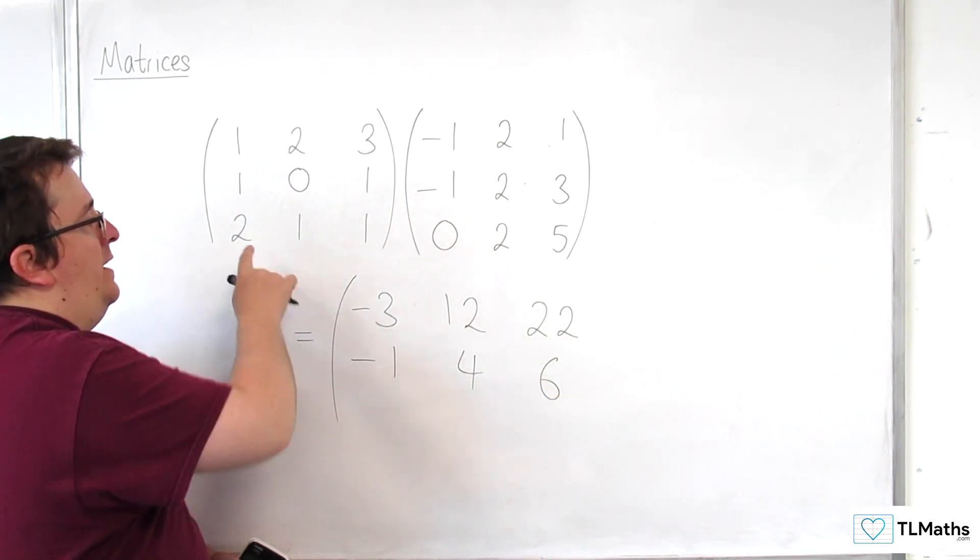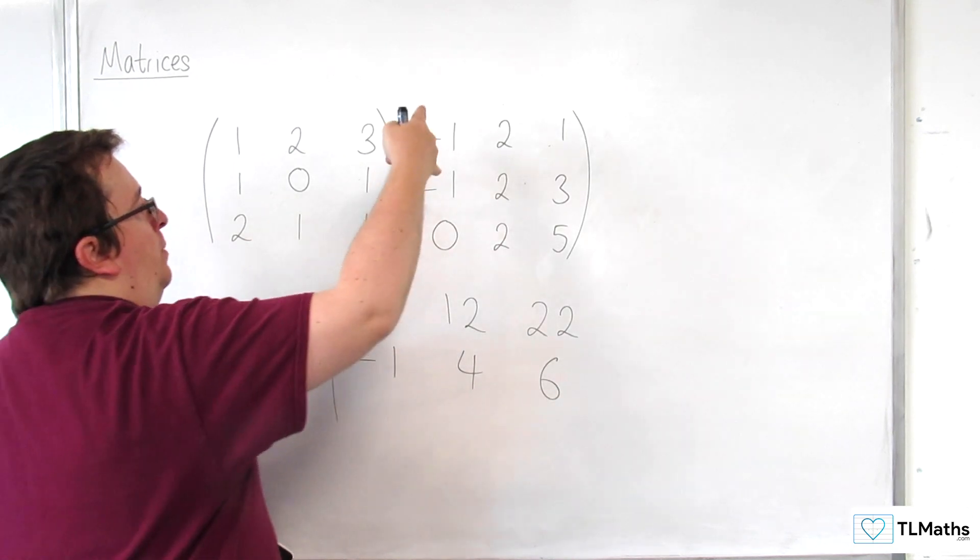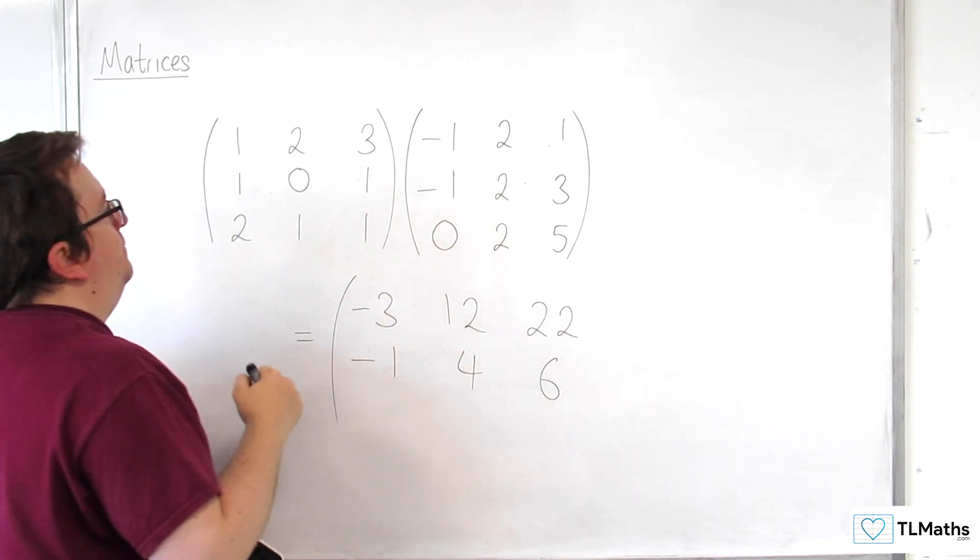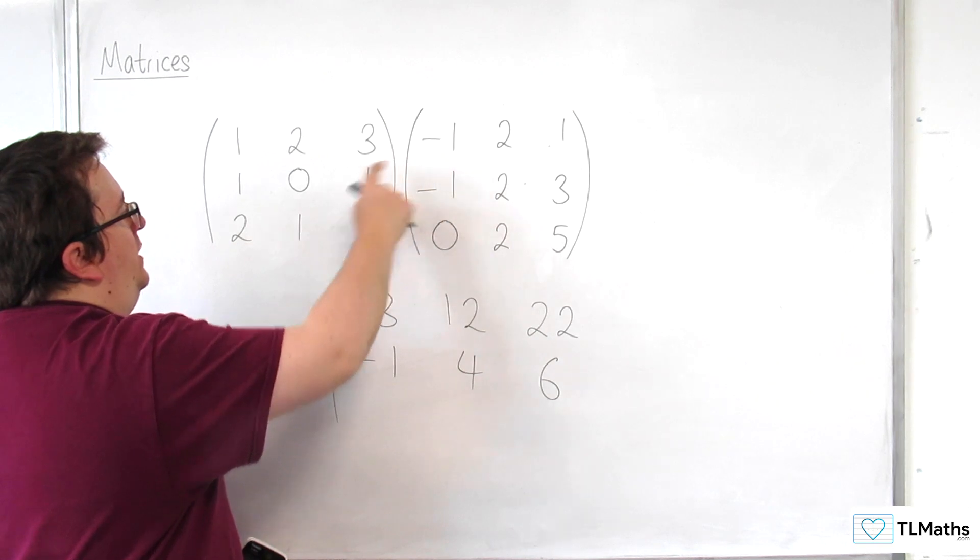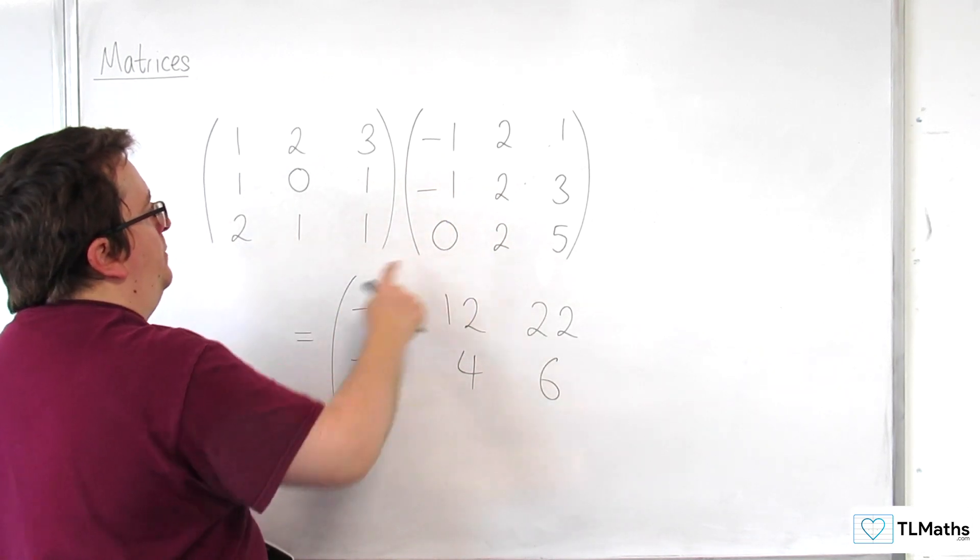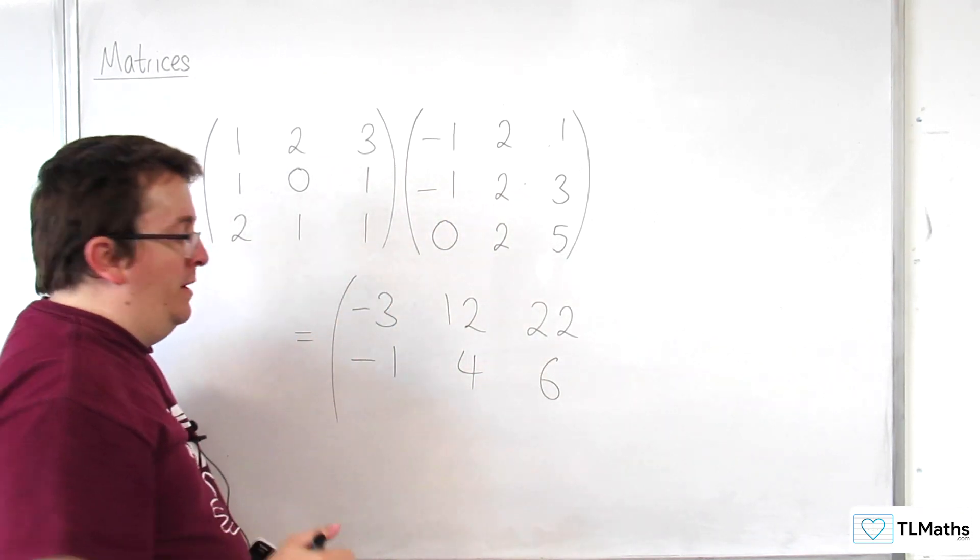Okay. Then, we've got the third row, multiplied by each of the columns. So, 2 times -1, plus 1 times -1, plus 1 times 0. So, that's going to be -3.